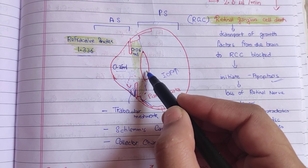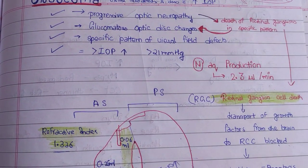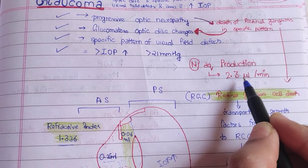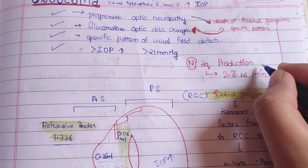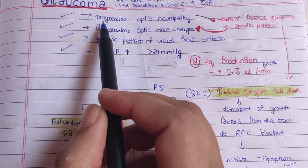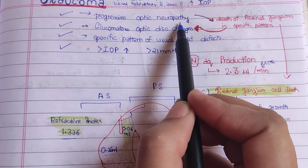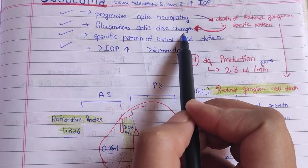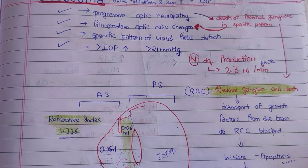It is because of the increase in IOP that glaucomatous changes occur. Normal aqueous production — remember this for MCQs — is 2.3 microliters per minute. In glaucoma, progressive optic neuropathy occurs; IOP elevation leads to glaucomatous optic disc changes and a specific pattern of visual field defects.